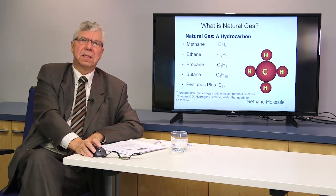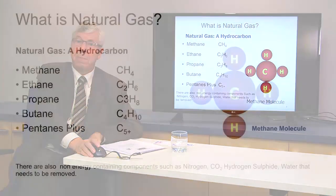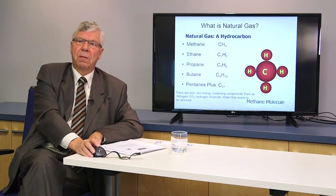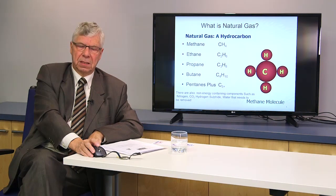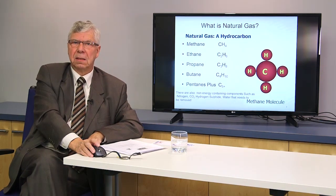First, let's consider what natural gas is. It's a hydrocarbon, mostly made up of methane CH4, but in a commingled gas stream from the wellhead we also have other products: natural gas liquids, ethane, propane, all the way up to pentanes and pentane pluses, which we refer to as condensates.